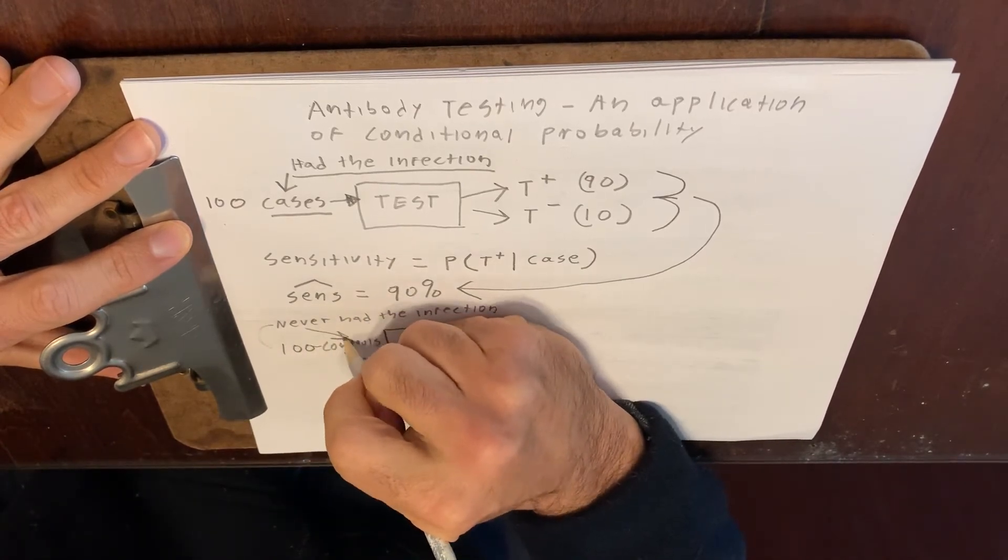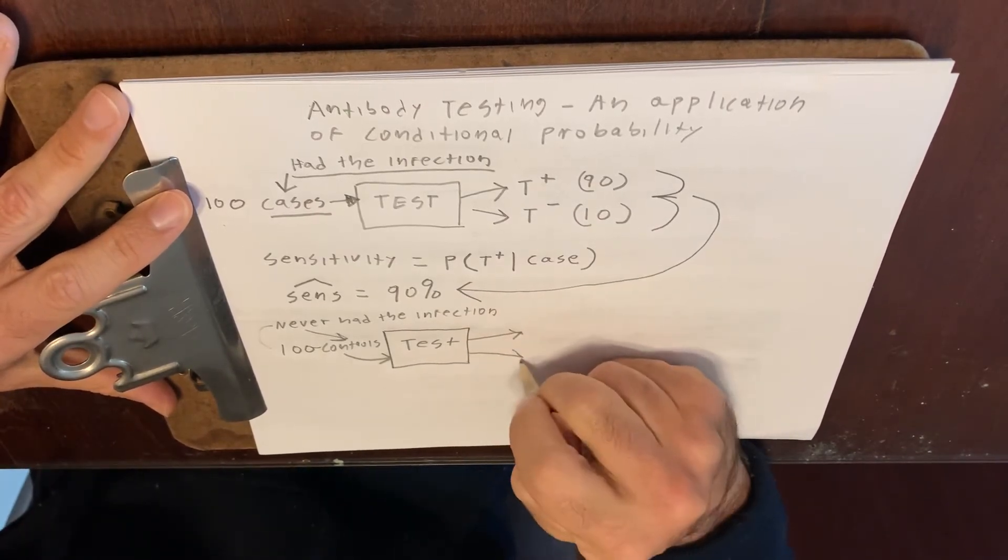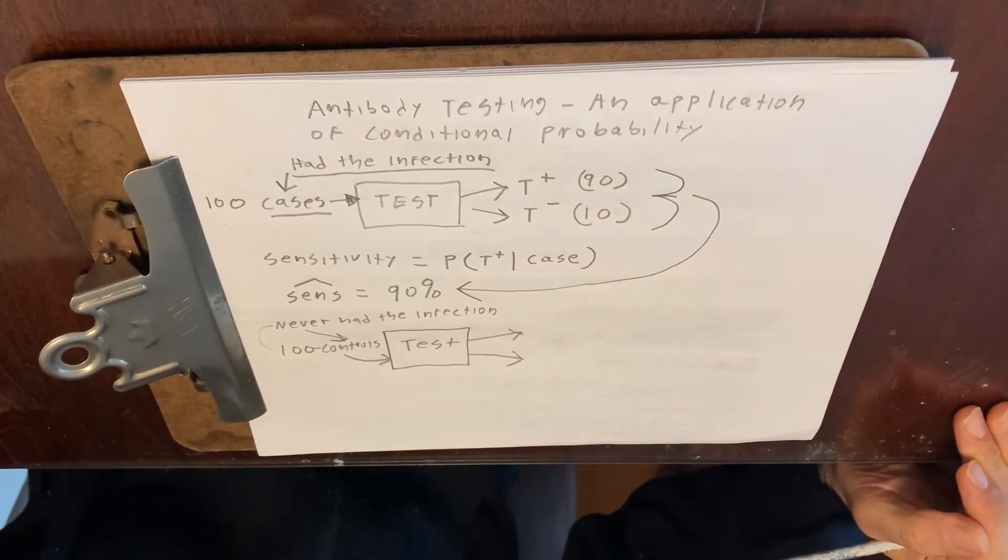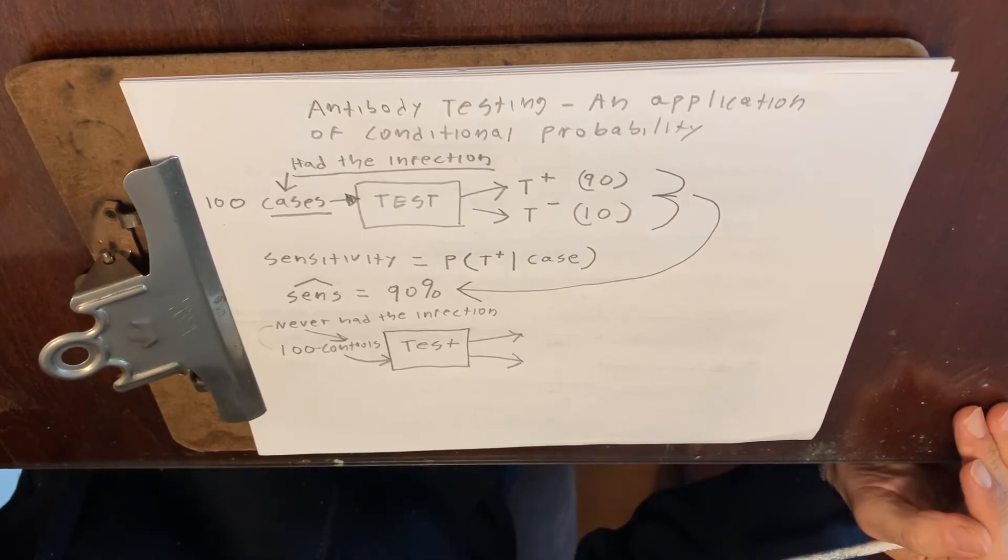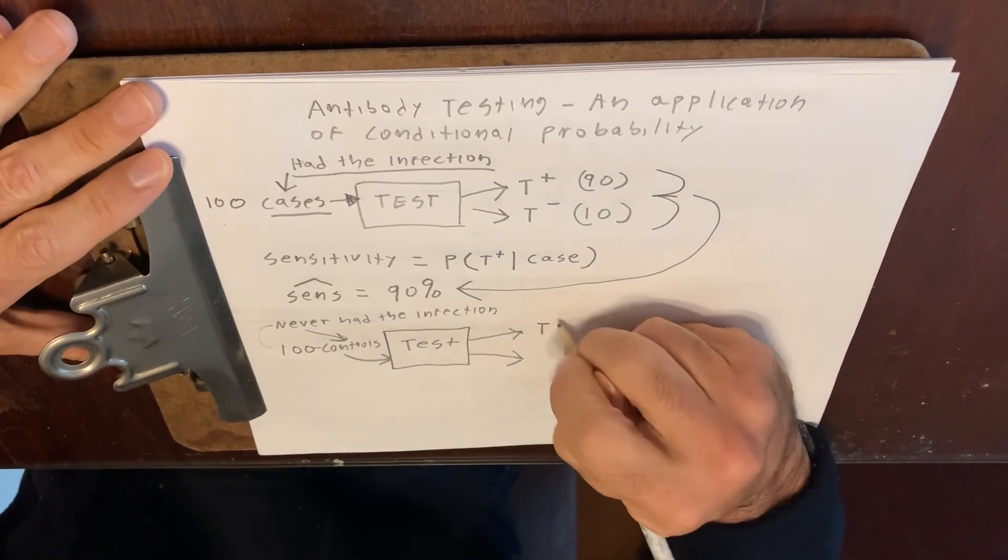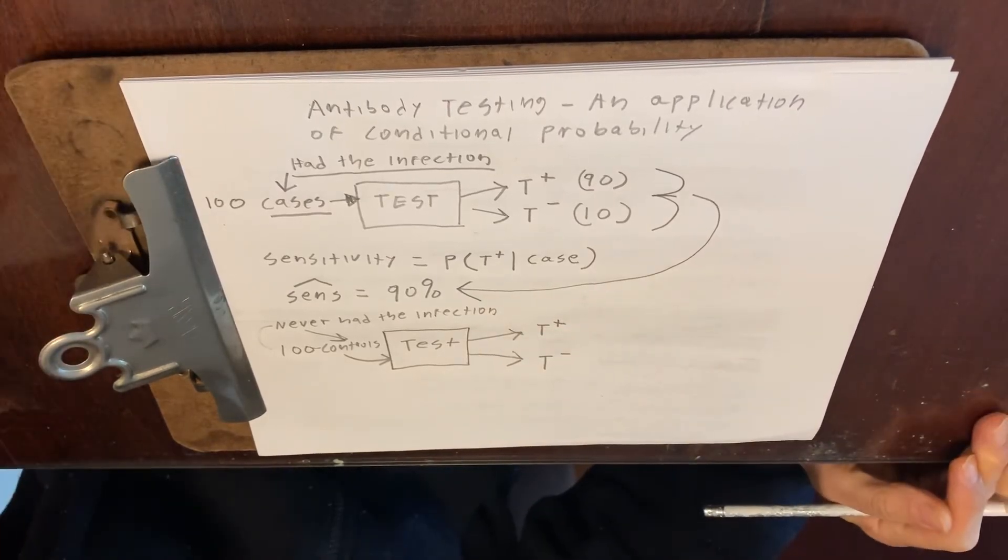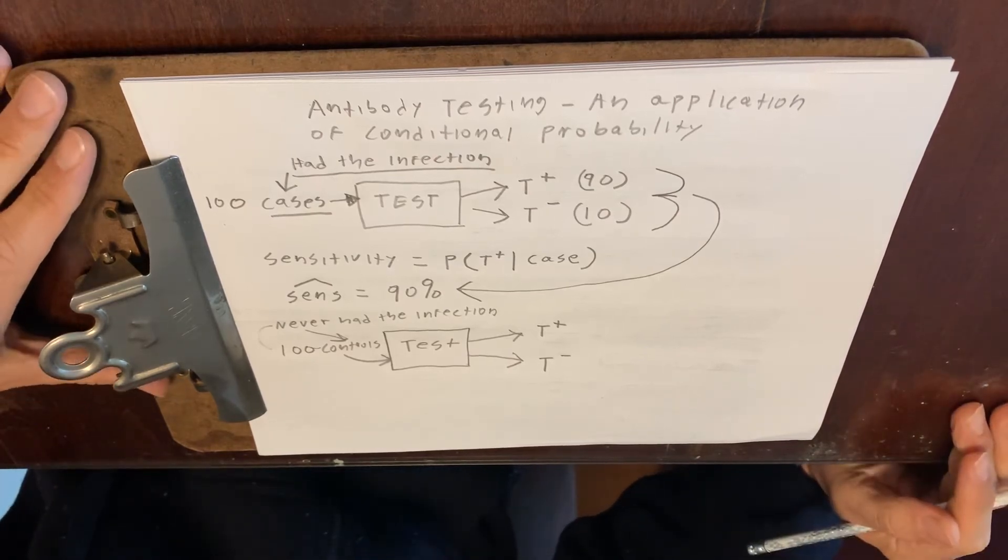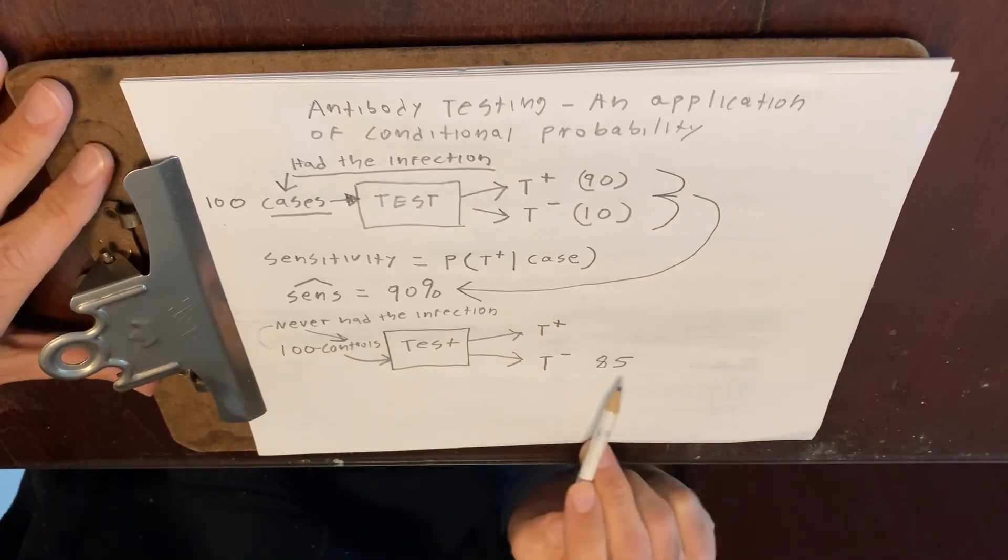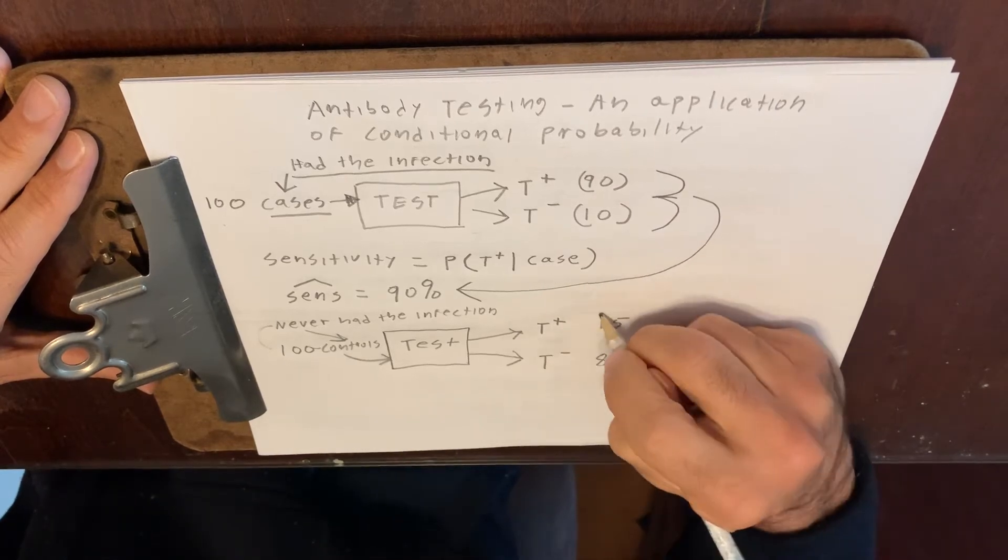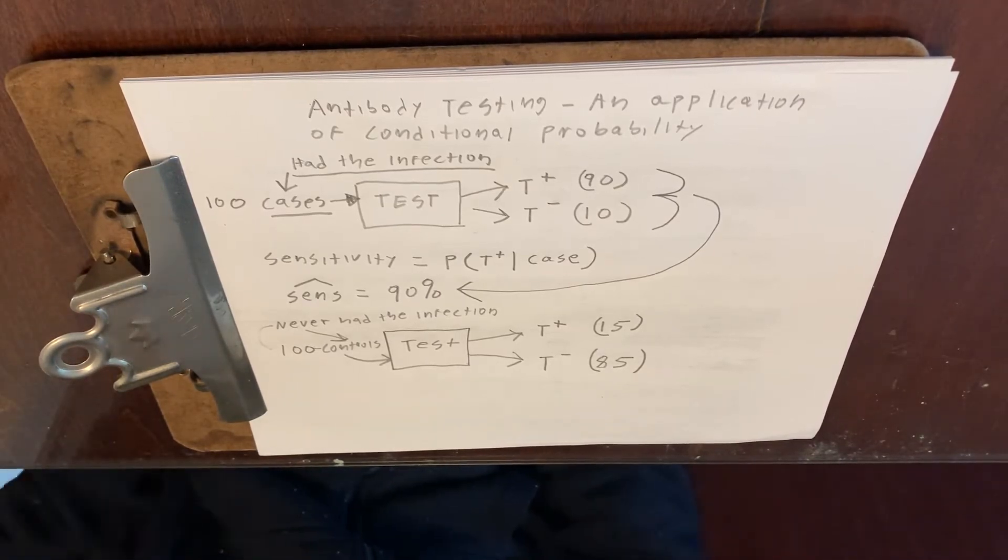Right? That's what a control would be, someone who never had the infection. I should put the arrow here. Never had the infection. Now, you would hope that if a subject was given a test that never had the infection, you would hope that the test would give these subjects mostly negative results, right? So we would count up the number of positives, just like we did before, and we would count up the number of negatives. And to make the math as easy as possible, let's say 85 of the controls tested negative and 15 of the controls tested positive out of a total of 100.